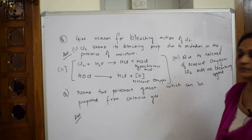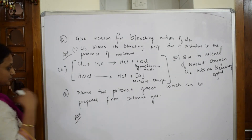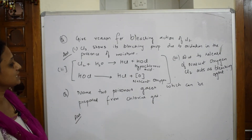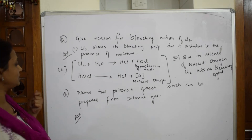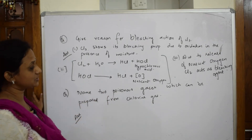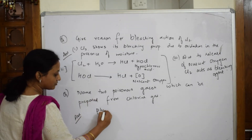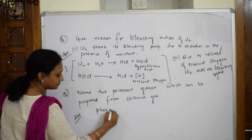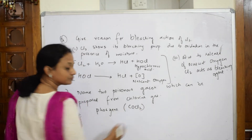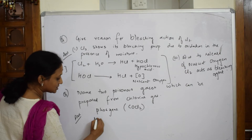The next common question: name three poisonous gases that can be prepared from chlorine. The first poisonous gas is phosgene, with formula COCl₂. The second poisonous gas is mustard gas.